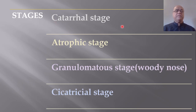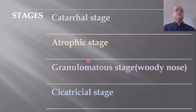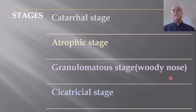Rhinoscleroma has four stages. Some books describe three stages because the catarrhal stage resembles any other upper respiratory tract infection. Then there is an atrophic stage, a granulomatous stage — also called 'woody nose,' which is the most common presentation — and finally a cicatricial stage.